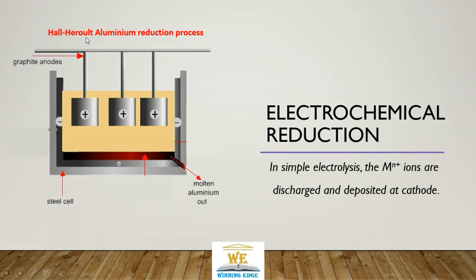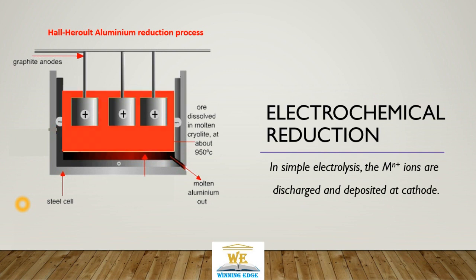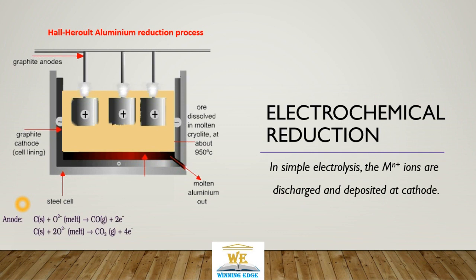Here we have the Hall-Heroult aluminum reduction process. Its electrodes are made of carbon - graphite anode and graphite cathode. We heat it up to melt the alumina at around 950 Celsius, and then pass the current through it. What happens? At the anode,